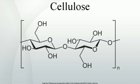Cellulose was discovered in 1838 by the French chemist Anselme Payen, who isolated it from plant matter and determined its chemical formula. Cellulose was used to produce the first successful thermoplastic polymer by Hyatt Manufacturing Company in 1870. Production of rayon, artificial silk from cellulose, began in the 1890s and cellophane was invented in 1912.